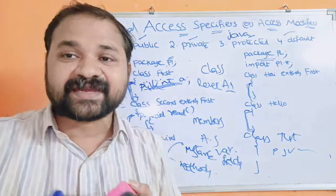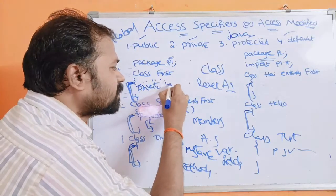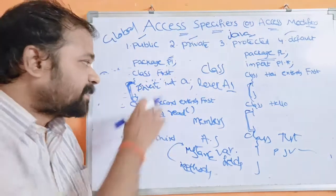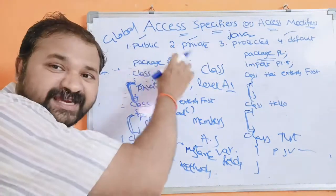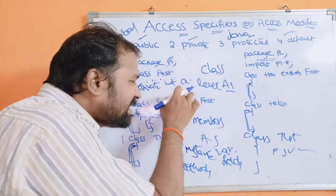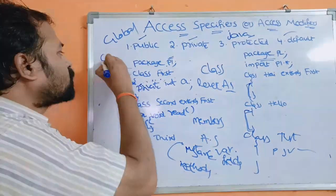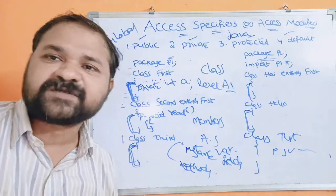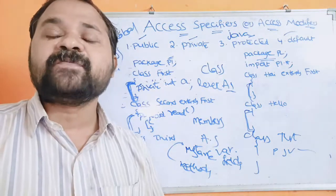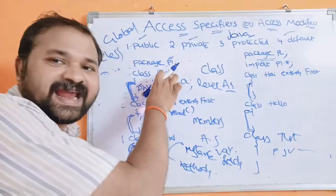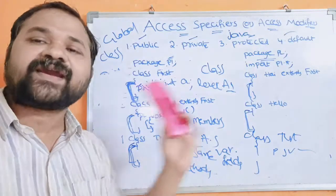Private members — for example, 'private int a' or 'private void read' — are accessible only inside the class in which they are declared. We can't access a private variable from outside that class or from another program. Private members have class scope.